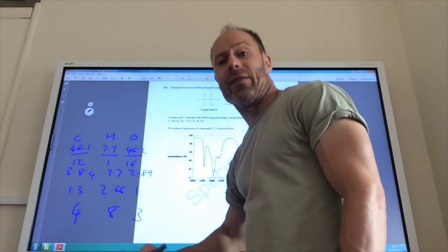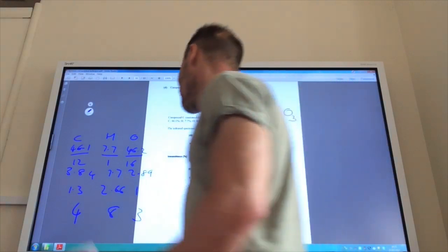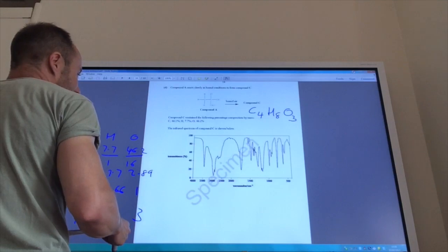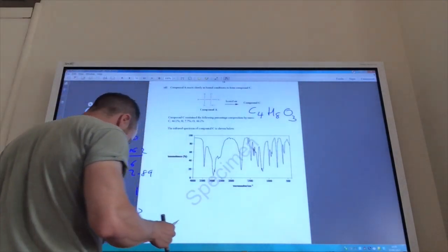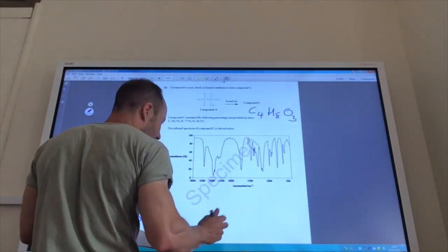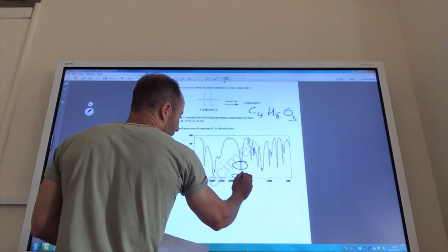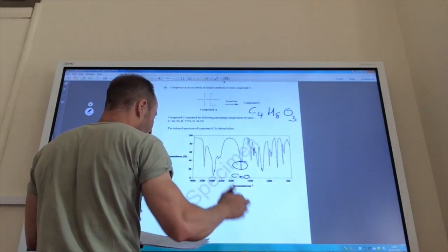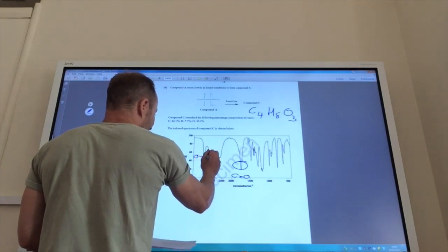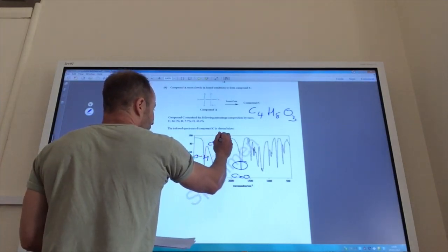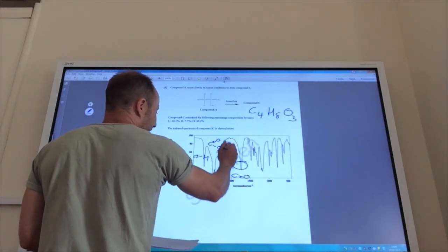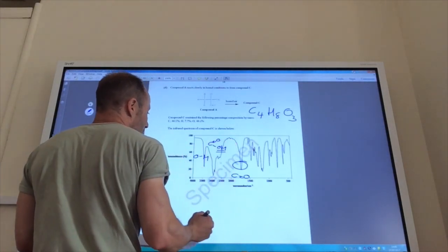Notice, I haven't got any chlorides there. So, all the chlorides have gone. Now, let's look at my infrared. I have got, quite clearly, C double bond O there. I have also got OH there, but I've also got this OH associated with a carboxylic acid here, because it's so broad.